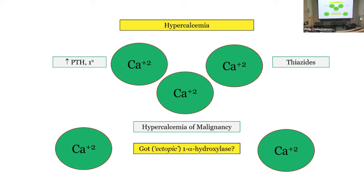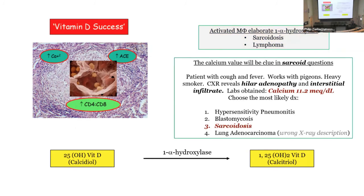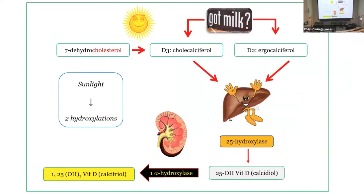Another cause of hypercalcemia: ectopic 1-alpha hydroxylase production. One-alpha hydroxylase activates vitamin D to its active form — 25-hydroxy vitamin D is far less active. Lymphoma and sarcoidosis have activated macrophages that elaborate ectopic 1-alpha hydroxylase. Result: excess active vitamin D leads to too much calcium absorption from the gut.